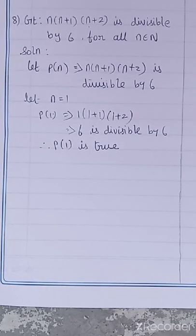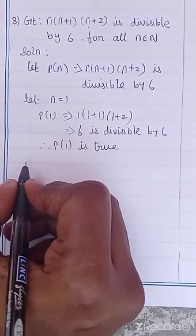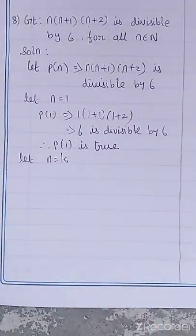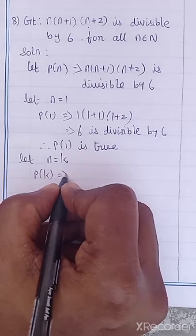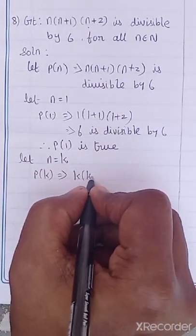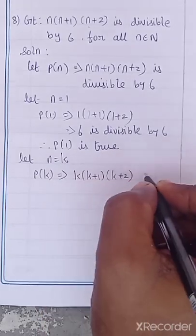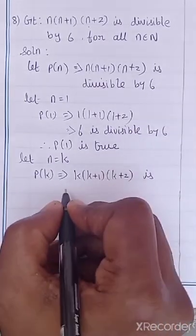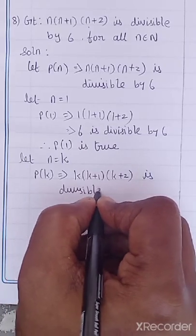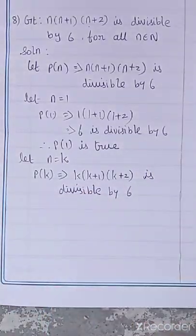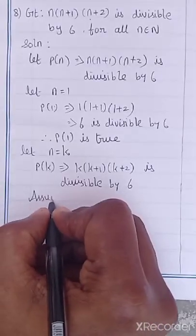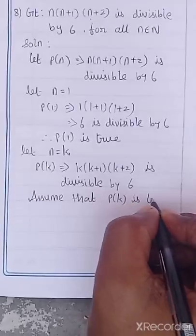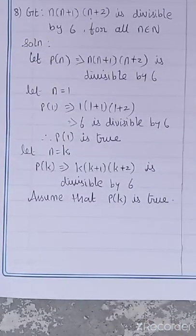P of 1 is true. What is your next step? We have to take N equal to K. Let N equal to K. So P of K implies K into K plus 1 into K plus 2 is divisible by 6. Assume that P of K is true.